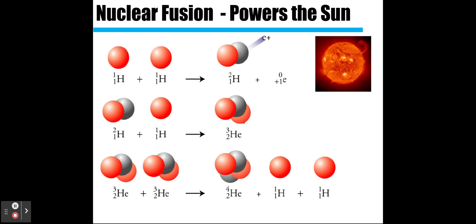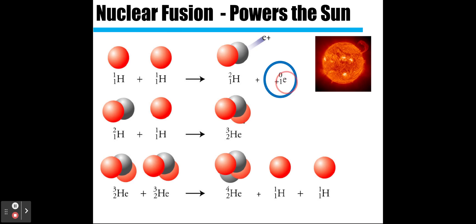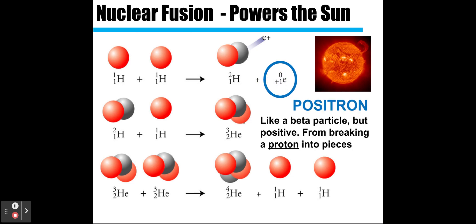Here's an example of reactions going on in the sun. Two hydrogen atoms combine together to form another larger hydrogen atom. You'll notice the two hydrogens come together and you get another hydrogen plus what is called a positron. This is positron emission — it has the symbol E for electron but with a positive charge instead of negative.